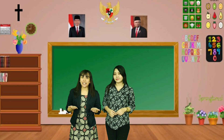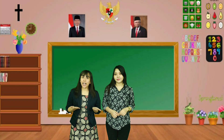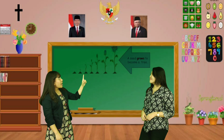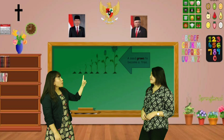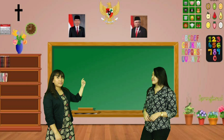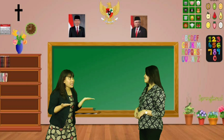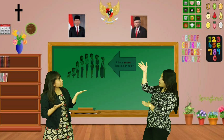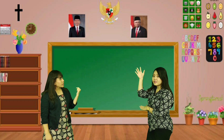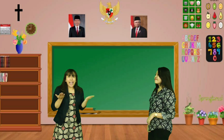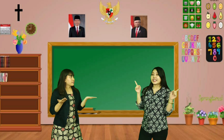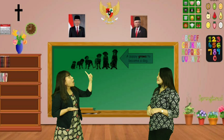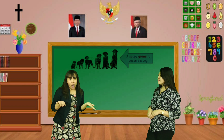All living things need life processes. For example, a seed grows to become a tree. How about human beings? A baby grows to become an adult. How about animals? Let's take a look at these animals — a puppy grows to become a dog.